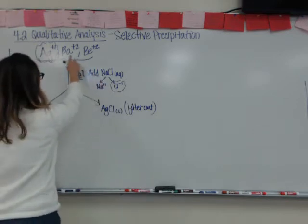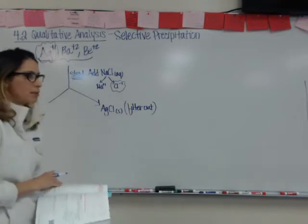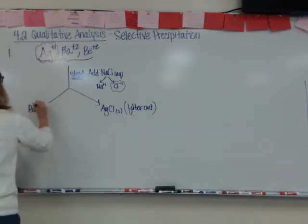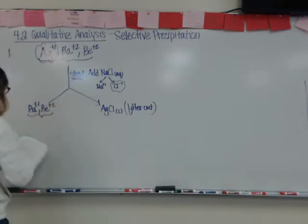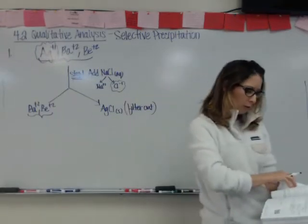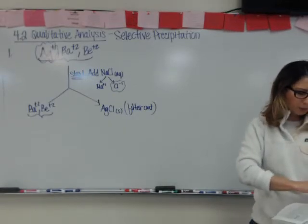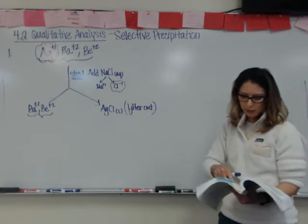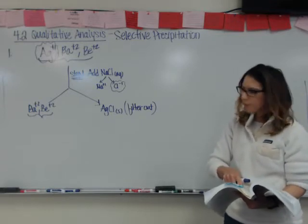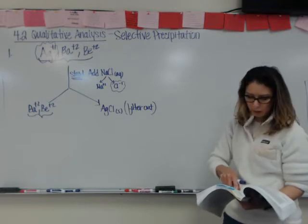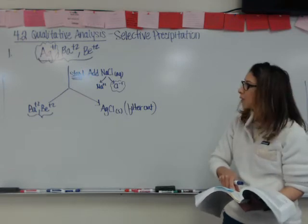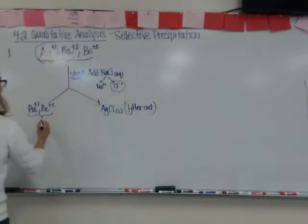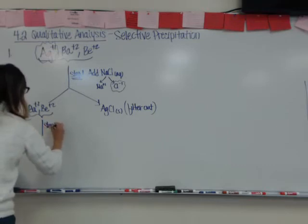You just have to be careful that what you're adding won't also pull out another ion, because that wouldn't be selective precipitation. Now we're left with barium and beryllium. Going back to the solubility rules, looking at the sulfates halfway down — many sulfate compounds are soluble in water, but they have low solubility with silver, calcium, strontium, barium, and lead. Since I still have barium, I can pull it out in step two.